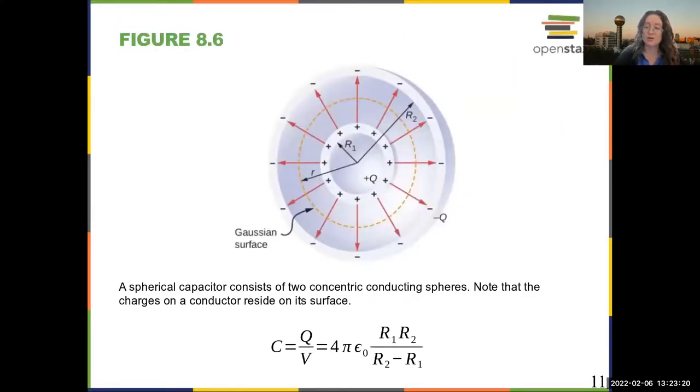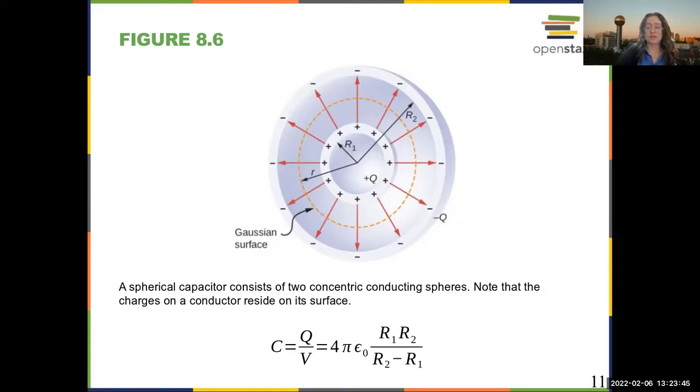Spherical capacitor has similar properties. If you get that separation between the two spheres to be smaller, then you can get a larger capacitance. And if you make the capacitor larger, you get a larger capacitance. The geometry is a little bit trickier to work out here, but same basic principle.